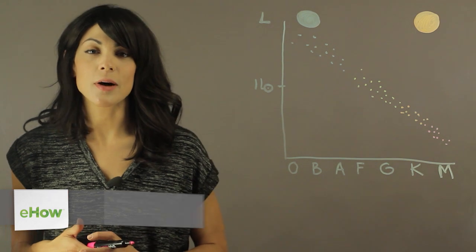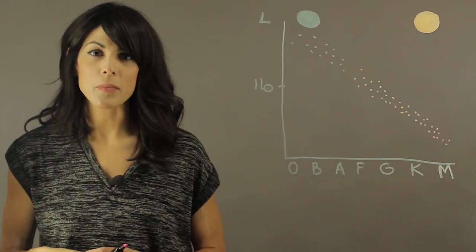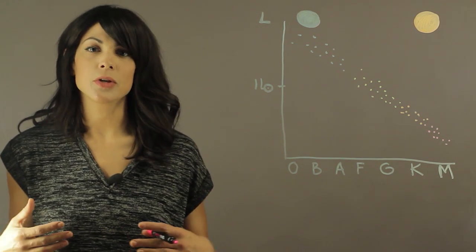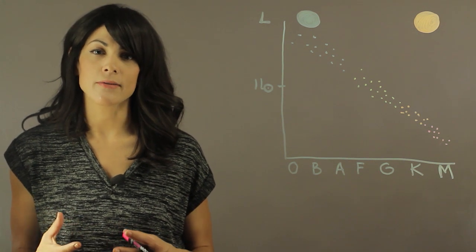So the Sun is the largest and most massive object that we have here in the solar system. But actually when it's compared to the other stars, to the rest of the universe, it's actually a very average star.